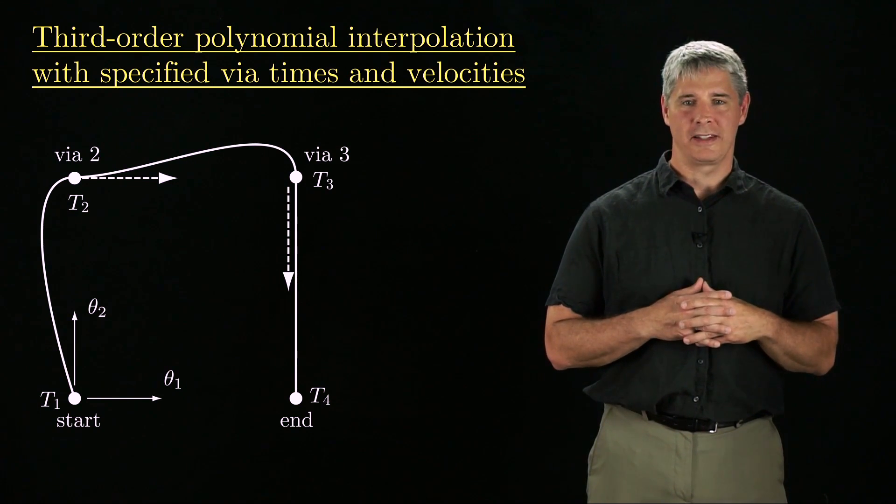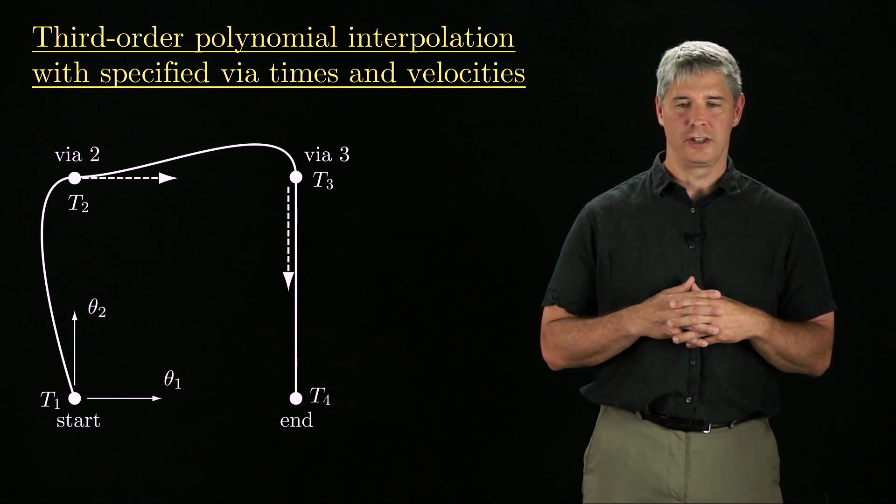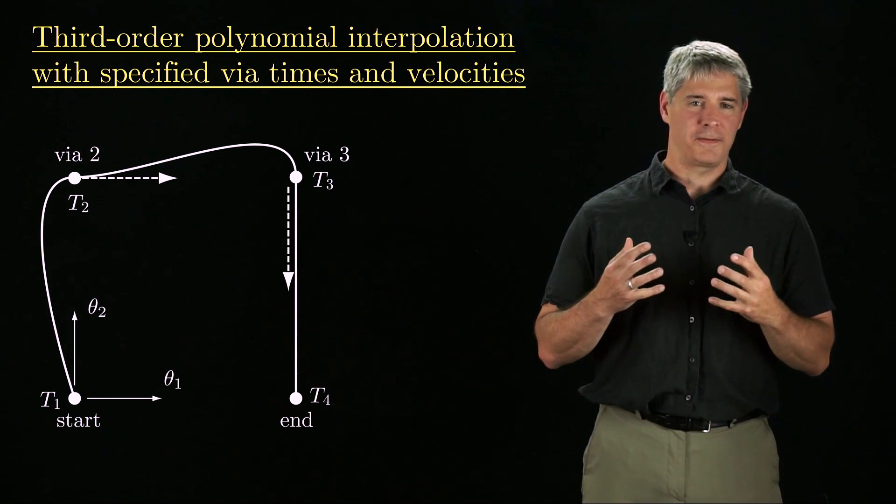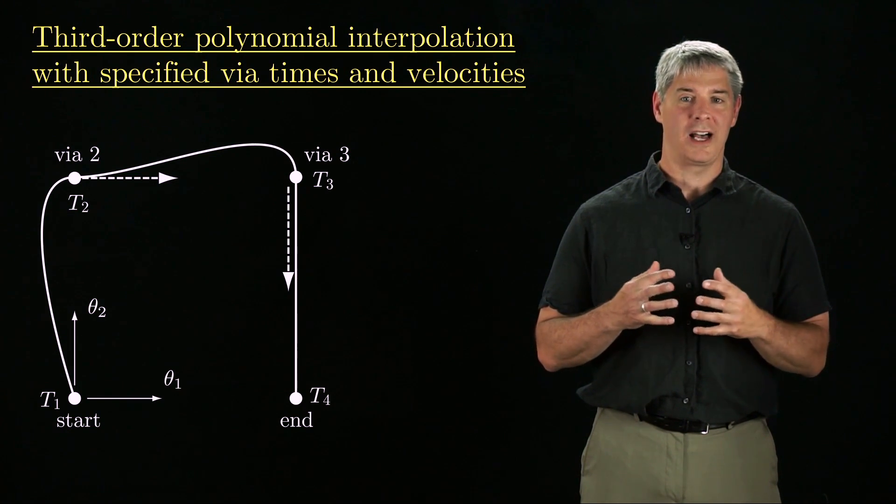This figure shows a path designed for a two-joint robot using four via points—the start point, the end point, and two other vias. Each via point has the time that the robot passes through the configuration as well as the velocity at that time.